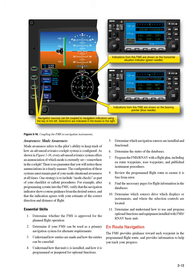Essential Skills: 1. Determine whether the FMS is approved for the planned flight operation. 2. Determine if your FMS can be used as a primary navigation system for alternate requirements. 3. Understand how entries are made and how the entries can be cancelled. 4. Understand how that unit is installed, and how it is programmed or jumpered for optional functions.